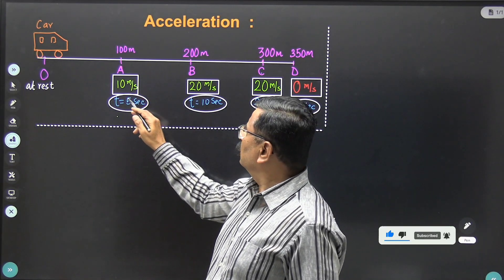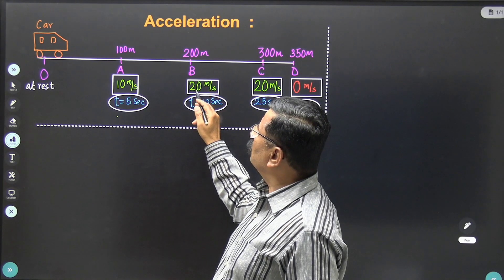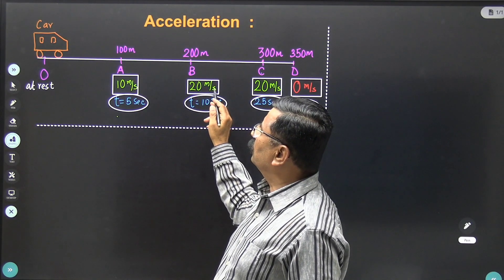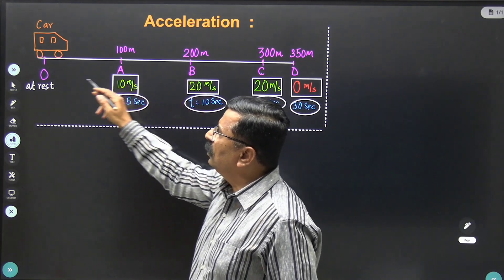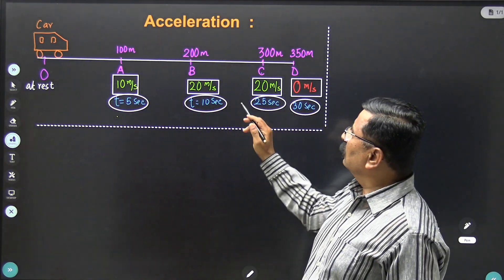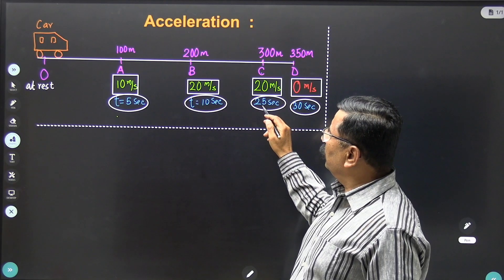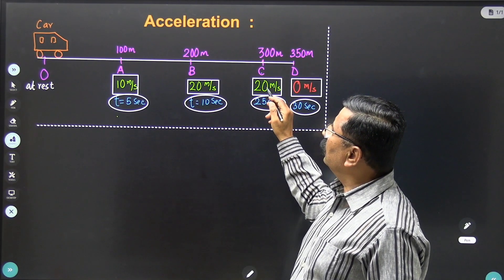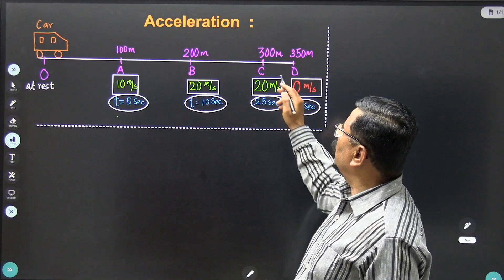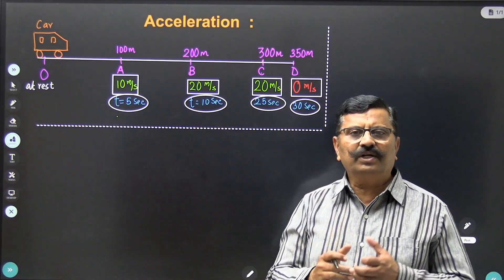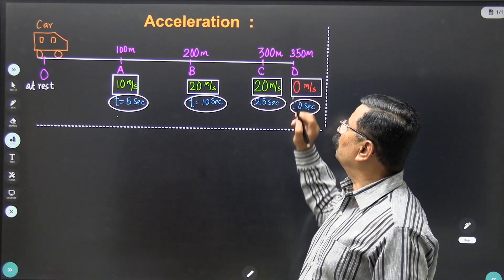After 5 seconds, then again at T equal to 10 seconds, the velocity of the car becomes 20 meters per second when the car reaches 200 meters from the rest position. Then at 300 meters, after 25 seconds, the car moves at the same speed of 20 meters per second. Later the driver applies brakes and the car comes to rest at point D.